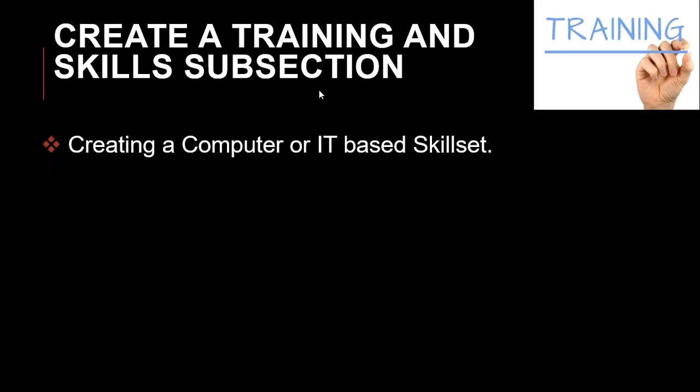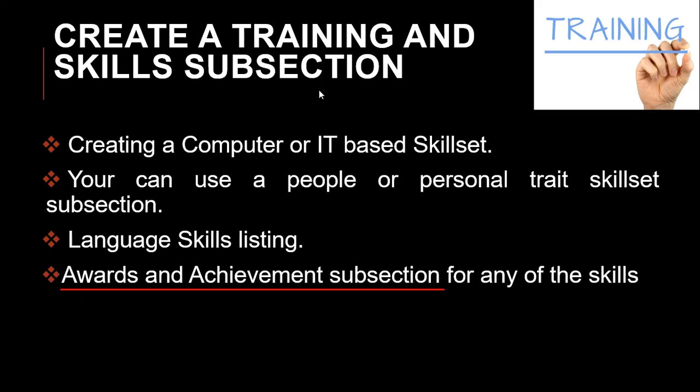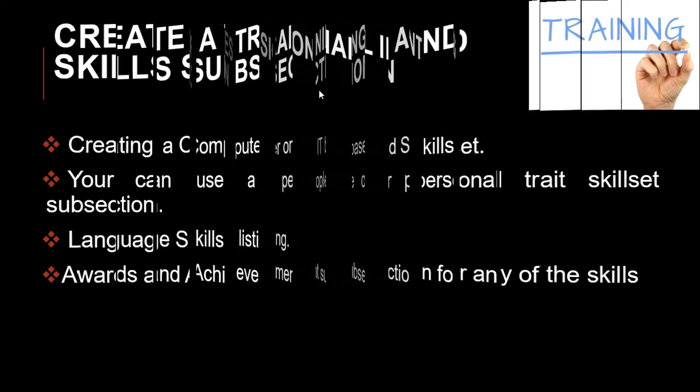Point number two: create a training and skills subsection. This training and skills subsection can include computer or IT-based skills, in which your computer literacy can be mentioned. You can have a language skills subsection indicating your native or fluent languages, languages that you have intermediate or working proficiency in, and languages that you have a basic understanding of. Similarly, you can include an awards and achievements subsection too.